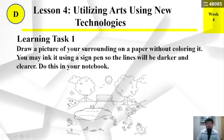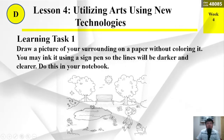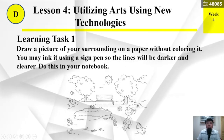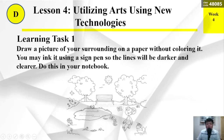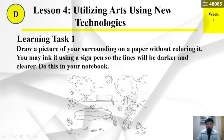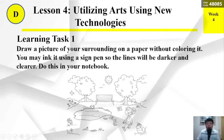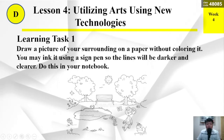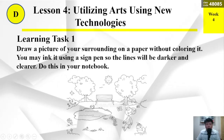Learning Task Number 1: Draw a picture of your surrounding on paper without coloring it. You may ink it using a sign pen so the lines will be darker and clearer. Do this in your notebook.